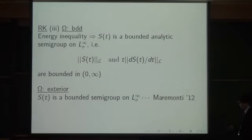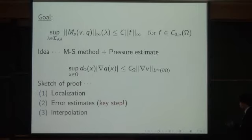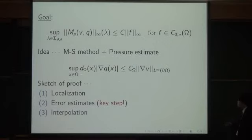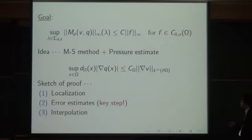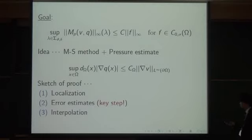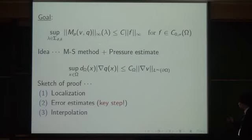I will now explain a brief sketch of the argument. Our basic idea is to combine the Masuda-Stewart method and the pressure estimate. The Masuda-Stewart method is divided into three steps: first, localization — we localize a solution into a domain by multiplying a cutoff function, then solve the resolvent equation with inhomogeneous divergence-free condition; second, estimate the error terms occurring in the cutoff procedure; third, by an interpolation argument, estimate the sup-norm of the resolvent.